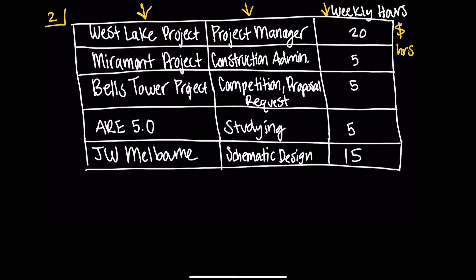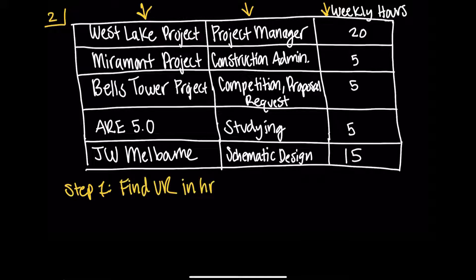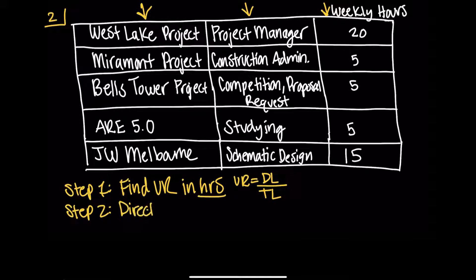Let's jump into this problem. We're looking at the different projects this person has. We're not told exactly what their title is, but that doesn't matter. They work in an architecture firm, working on different projects with different roles. In step one, we're told to find the utilization rate, and in hours: utilization rate equals direct labor over total labor. Step two: we know that for direct labor, direct labor is really billable labor — billable time, project related. You have to understand that definition about direct labor to know how to answer this problem.